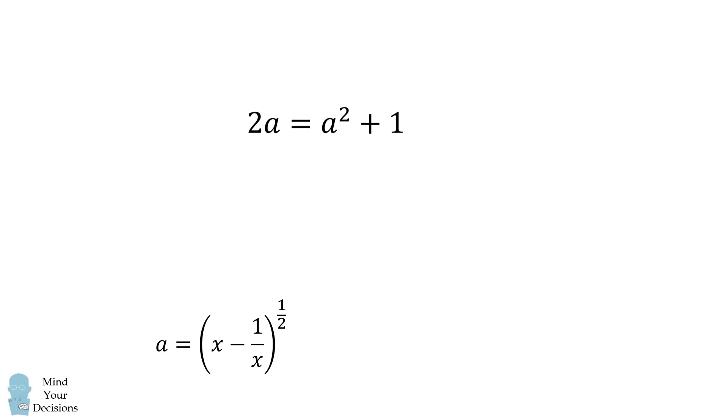We can easily solve this quadratic equation. We subtract 2a from both sides and then factor. We thus have the double root that a is equal to 1.